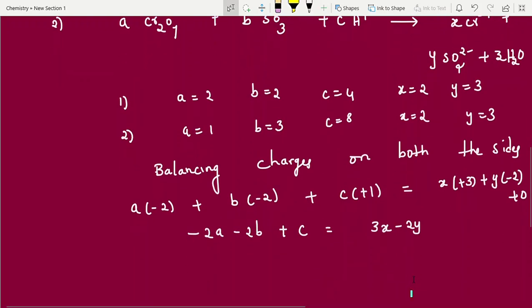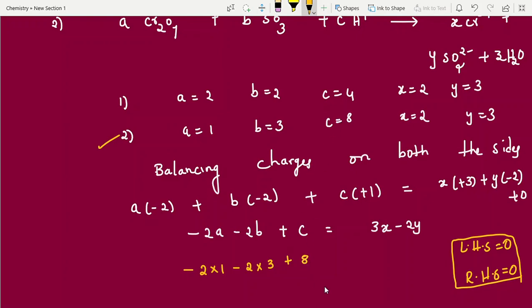Now solve this question. Minus 2A minus 2B plus C equal to 3X minus 2Y. Clear. Now after that, what we will do? We have to substitute this one, this value and check it. Both the sides. If left hand side you are getting 0, right hand side if you are getting 0, your answer is correct. I am checking second option. Minus 2 into 1 minus 2 into 3 plus C, 8. Next, 3X, 3 into 2 minus 2 into 3. Now solve this question students. Minus 2 minus 6 plus 8 equal to 6 minus 6.